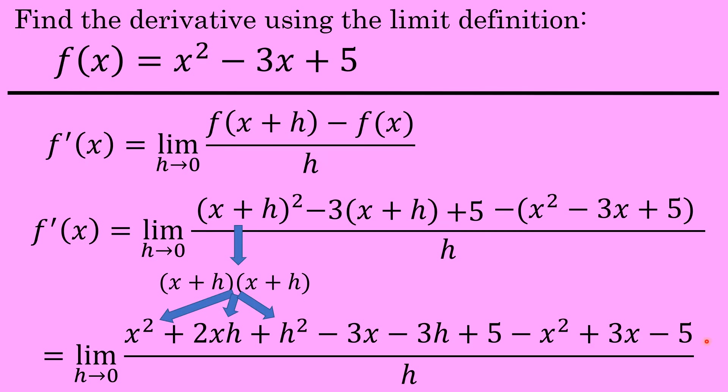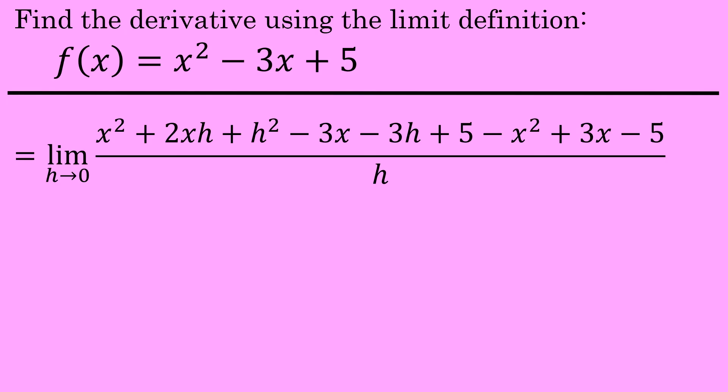The next step will be to combine all of the like terms in this numerator. This numerator actually has nine terms, and I do have three pairs of like terms, and actually all three pairs are going to add up to zero. x squared minus x squared. I have a term of minus 3x and a term of plus 3x, a term of positive 5 and a term of minus 5. All three of those pairs of like terms are going to add up to zero and will thus be eliminated from the problem.